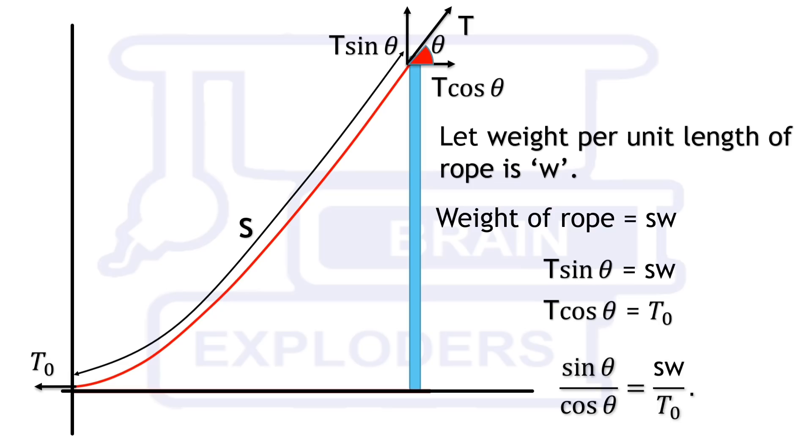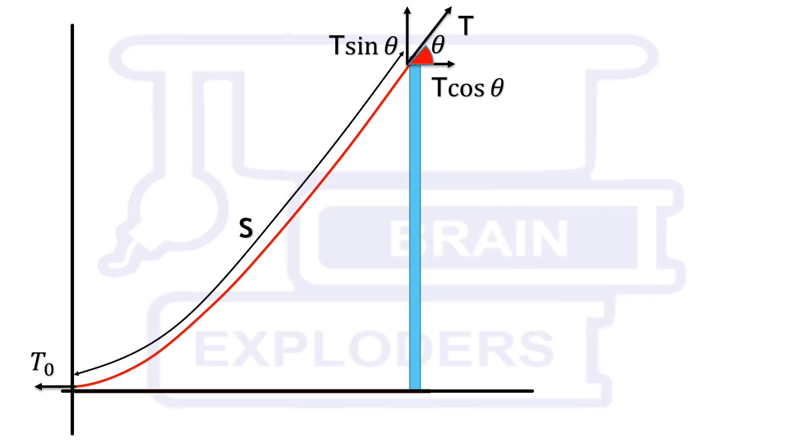Divide first by second. We get sin θ over cos θ equals to sw over T₀. Here T₀ and w are constant for each part of rope thus we can replace them by a constant k. And sin θ over cos θ can be written as tan θ. Tan θ represents the slope of curve at that point that is dy by dx.